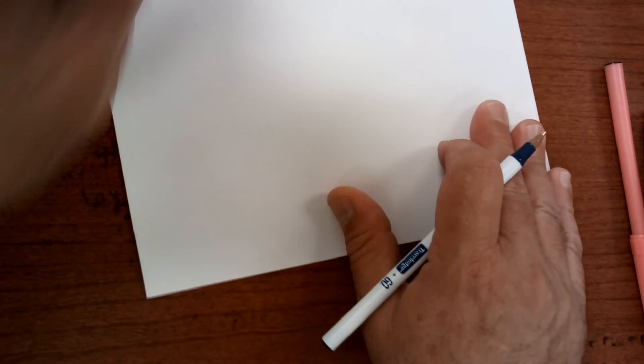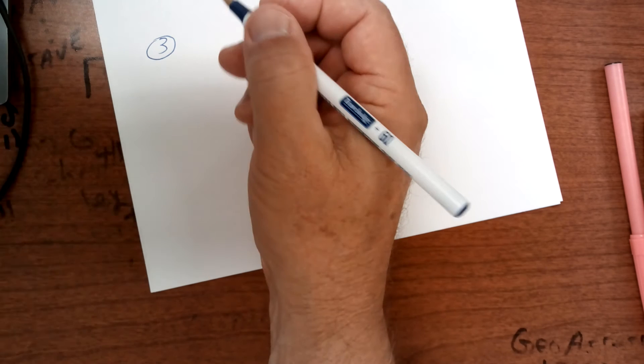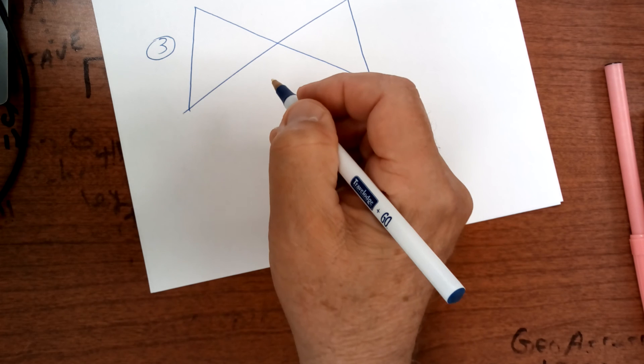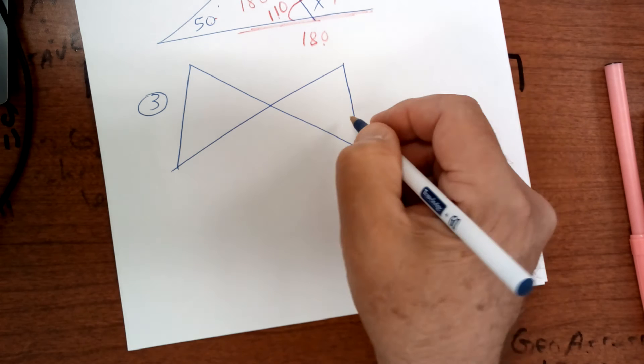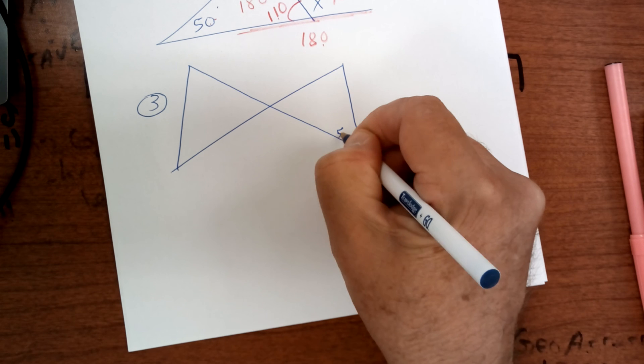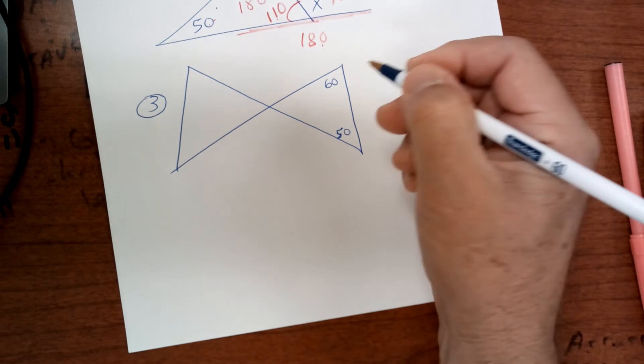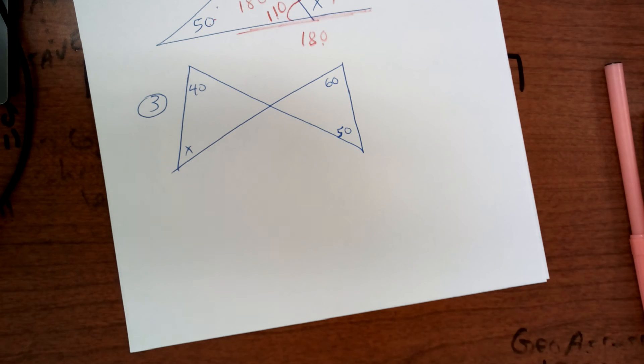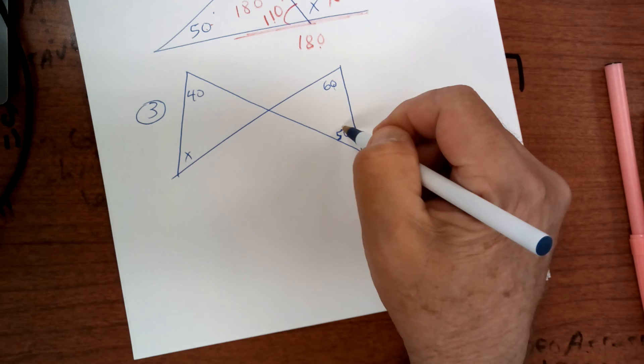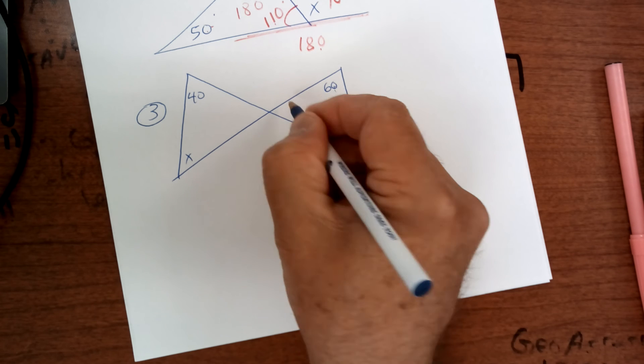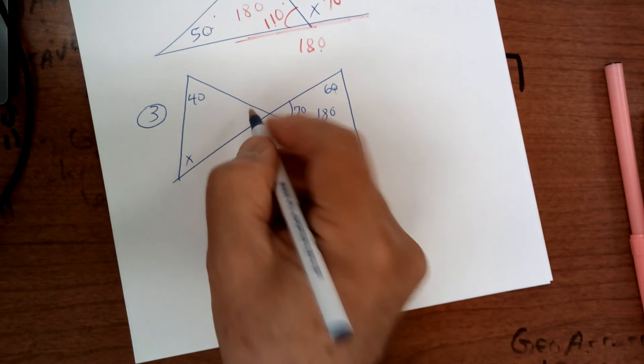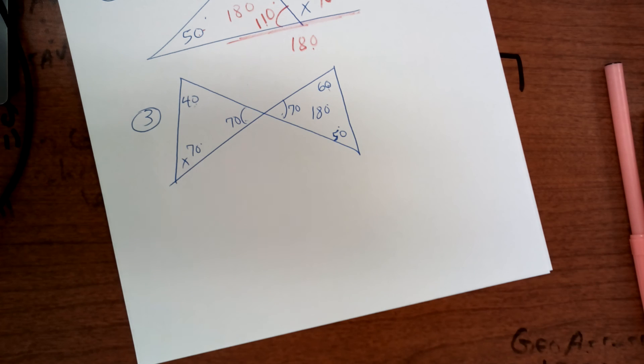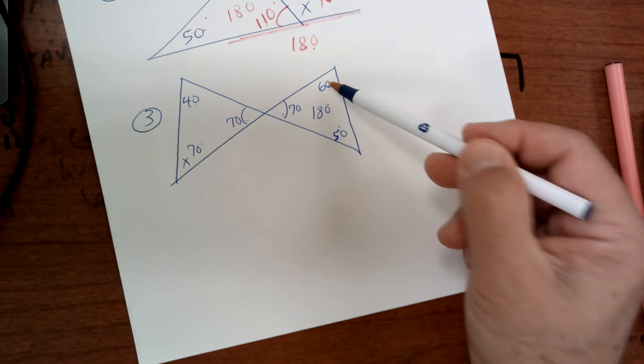Here's another one, number three. Draw this diagram. I call this the hourglass. Make this one 50 degrees, 60 degrees, 60 degrees, make this one 40 and make this one X. The way you're going to work this problem is you're going to add these up and get 110 and subtract from 180, so this one is 70. Now these are vertical, so put 70 here. Now you add these up, you get 110, so this one is 70 degrees. Notice what I did: I subtracted from 180, I used vertical angles, and then I subtracted from 180.